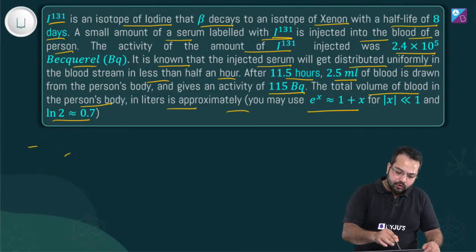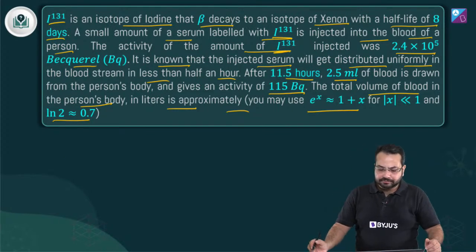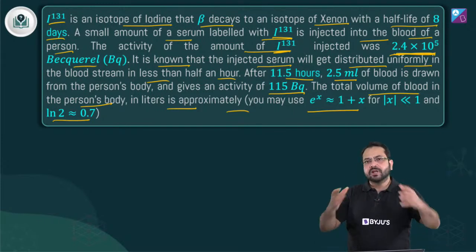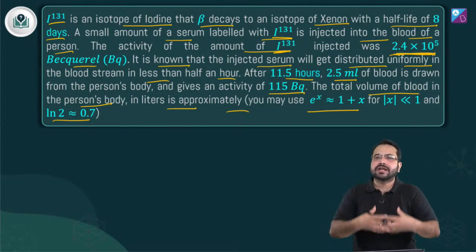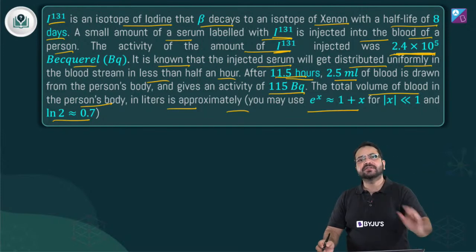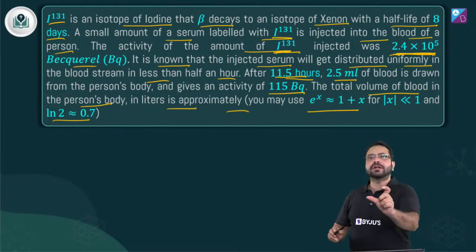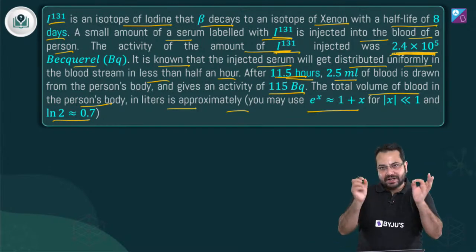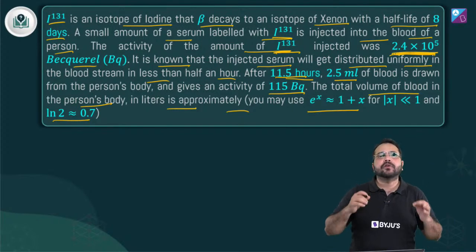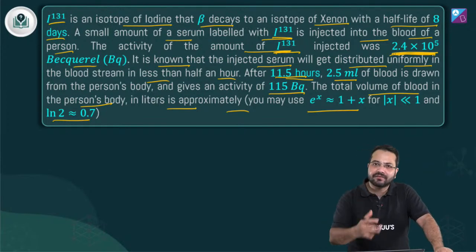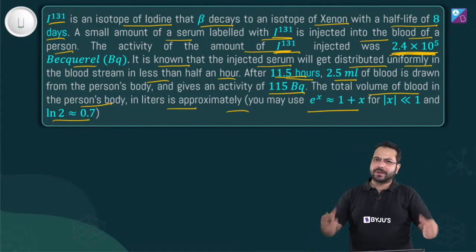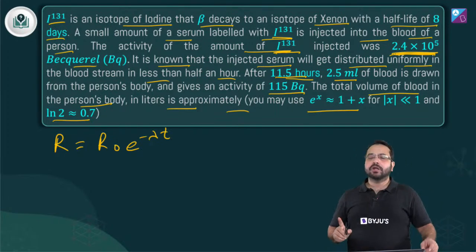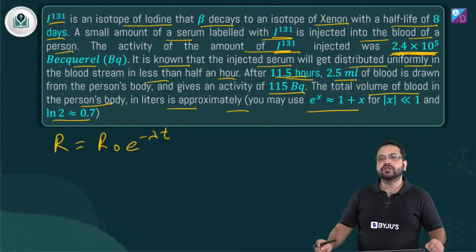Since |x| = 0.7/16 = 7/160 ≪ 1, we use the approximation e^x ≈ 1 + x. So activity after 12 hours ≈ 2.4 × 10⁵ × (1 − 0.7/16) = 2.4 × 10⁵ × (15.3/16). This activity is spread over the entire blood volume V liters, since the serum distributed uniformly.